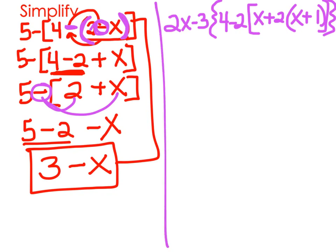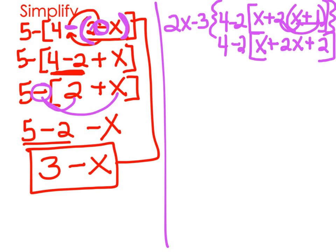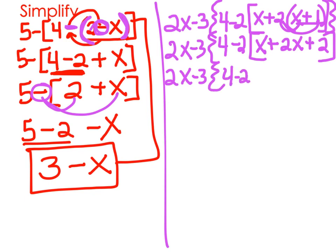Let's look at the purple one now. We've got 2x minus 3, brace, 4 minus 2, bracket, x plus 2, parenthesis, x plus 1, and they're all closed. We start from the innermost set and work our way out. We've got x plus 1 - can't do anything with it, but we can distribute this 2 to both: x plus 2, and 2 times 1 is 2. That still goes in the bracket. Now let's combine x plus 2x: 2x minus 3, and 4 minus 2, and x plus 2x becomes 3x plus 2.